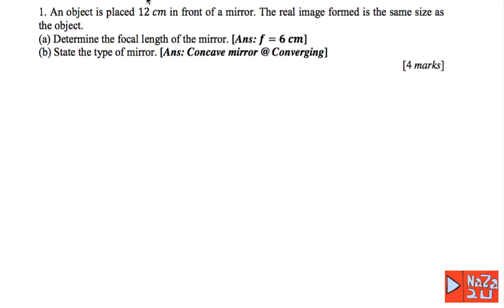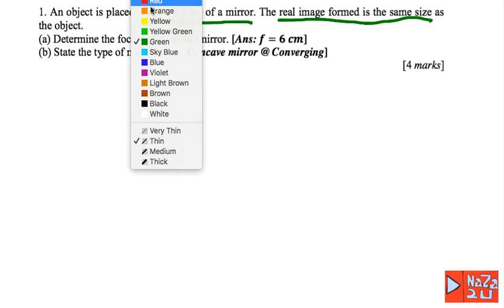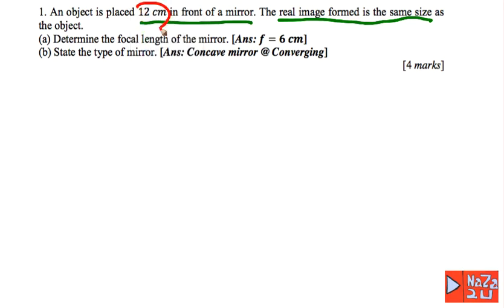All right, question number one. An object is placed 12 centimeters in front of the mirror and the real image forms at the same size. So the first information you can find from the equation is this.